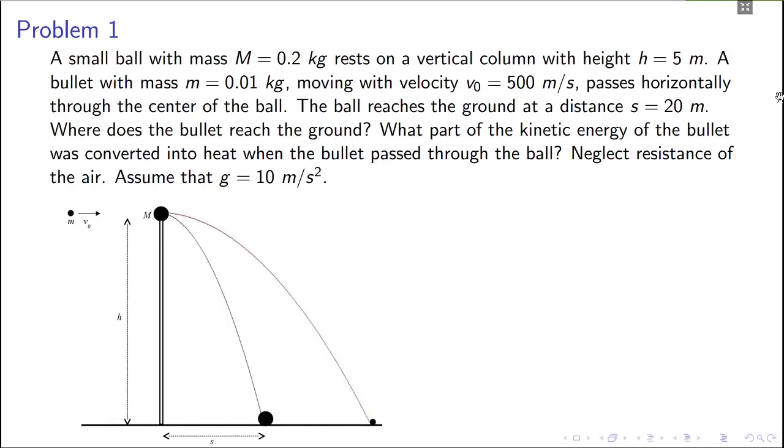This is the first problem. Basically there is a pole and a ball of mass capital M of 0.2 kg, and there is a bullet of mass small m with velocity v0. It's given m is 0.01 kg, velocity is 500 meters per second. It goes through the this mass and the mass falls down and hits at distance s on the ground. Then it asks where does the bullet reach the ground, so the distance of the bullet from the pole that you have to find out, and how much kinetic energy, what fraction of kinetic energy was lost when the bullet passed through the ball.